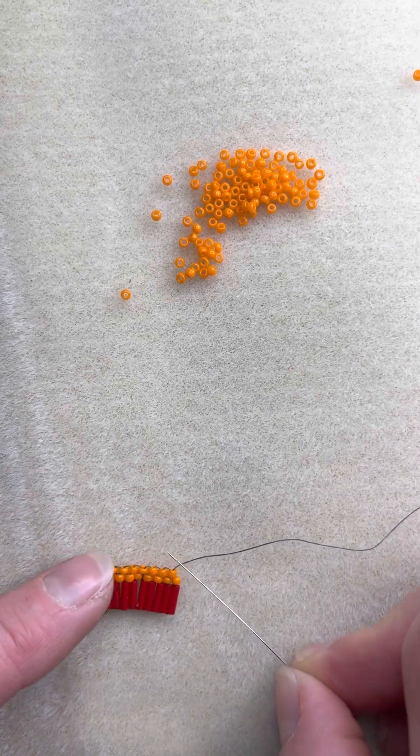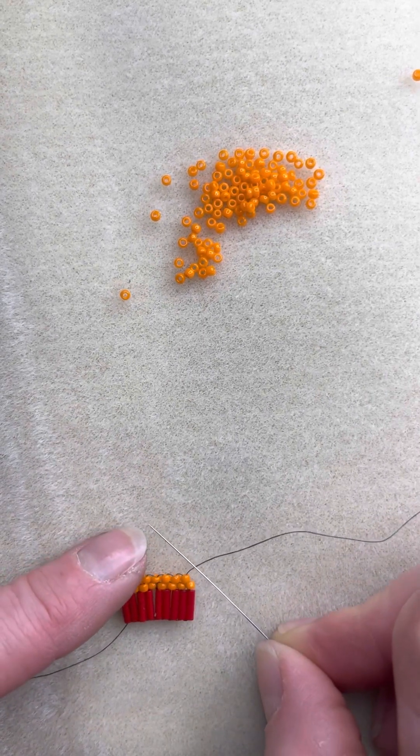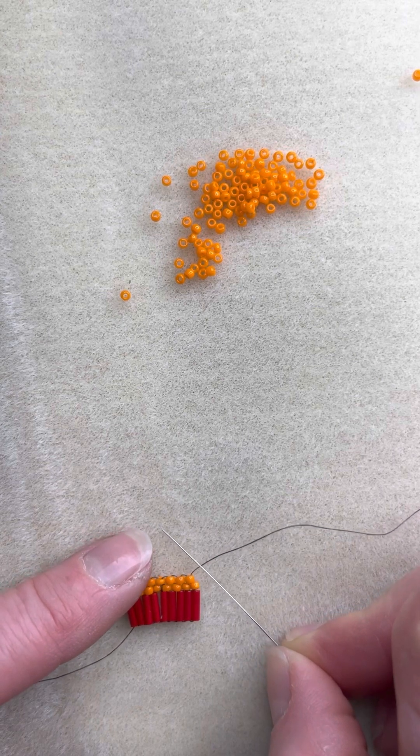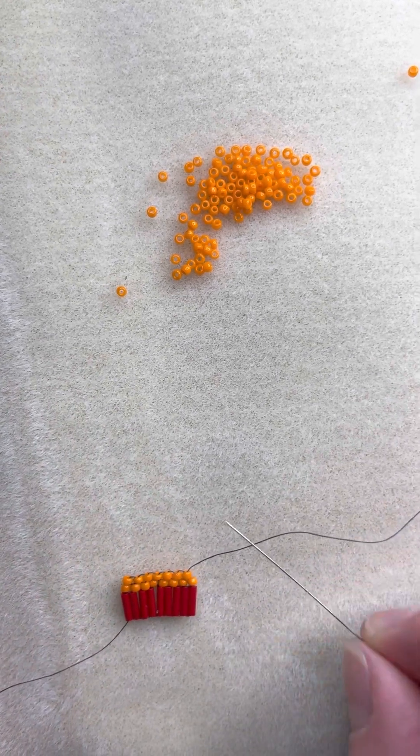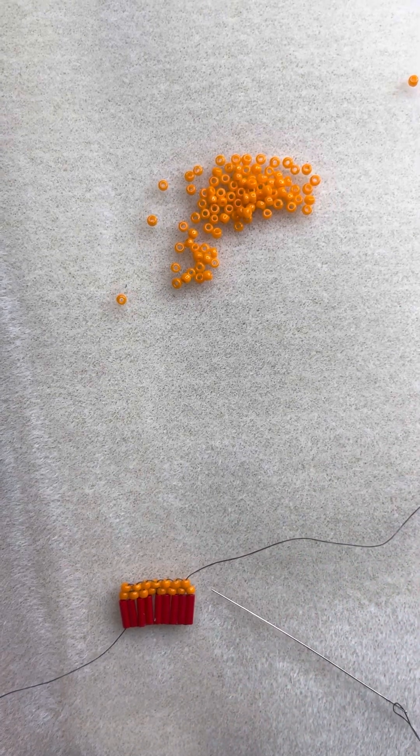You continue this brick stitch until you've naturally gone down to two beads at the top of your earring. I hope you found this useful. Thanks so much.